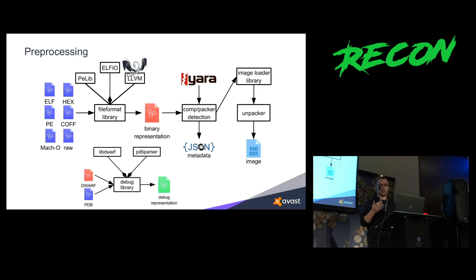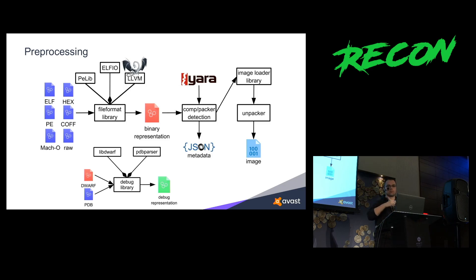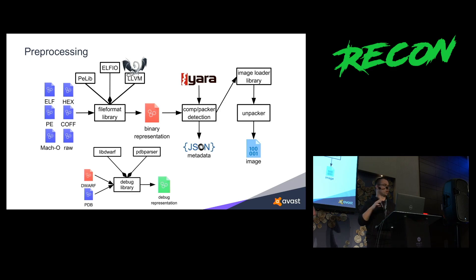All the parsed information and the detected compiler or packer are then serialized into a JSON file. When we detect that there is some packer from the detection phase, we run a set of unpackers. There are many unpackers but there is also one of our own, and the whole process repeats because we don't actually want to decompile the packed file — we want to decompile what's actually packed inside. We also have a library for image loading, which is basically a simulation of the system loader, because sometimes there are differences between how the file looks on disk and how it would look in memory.